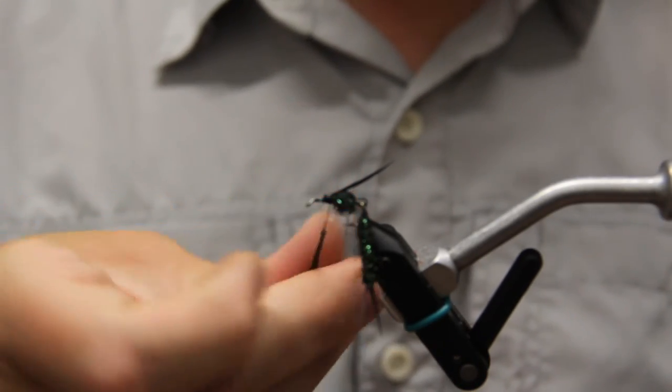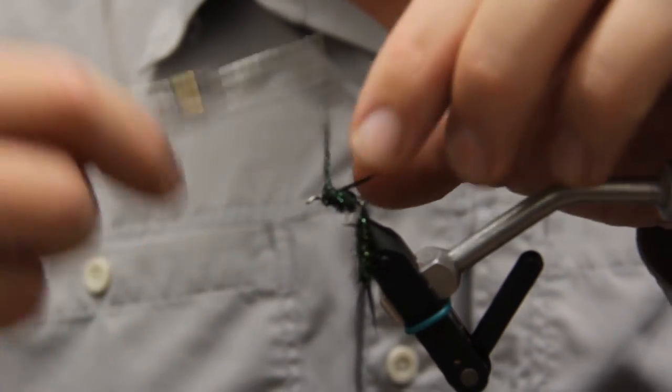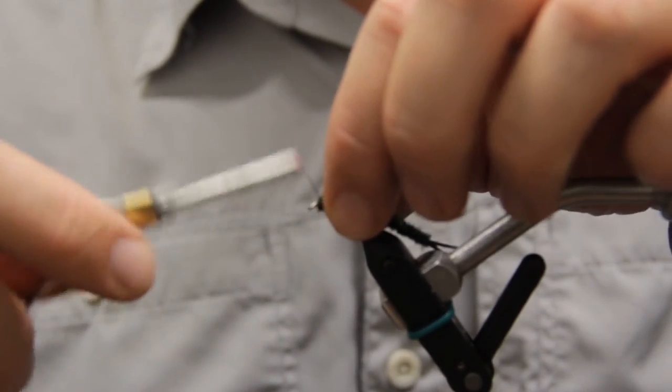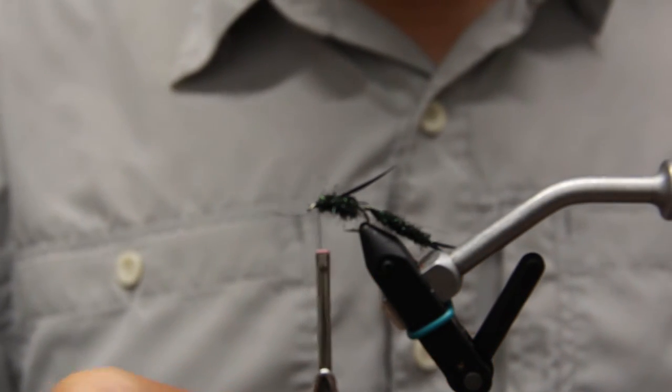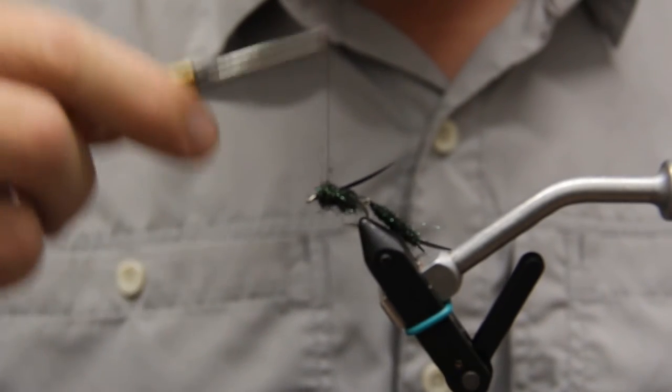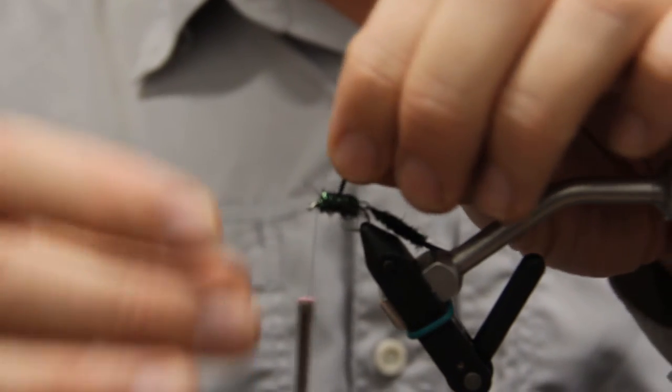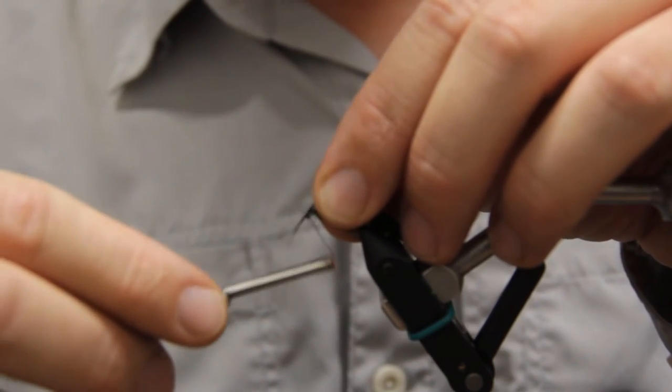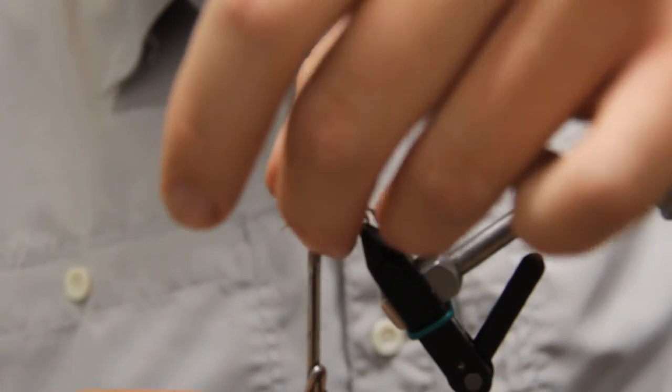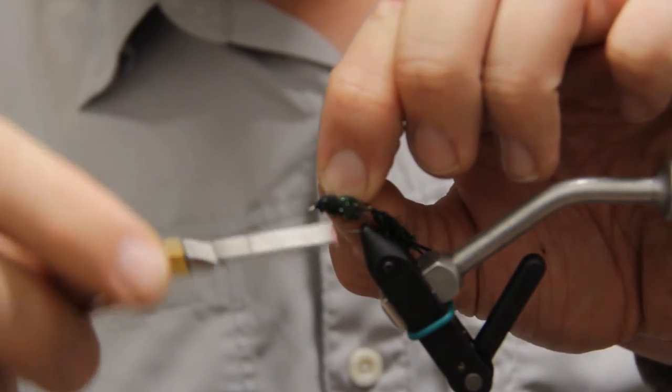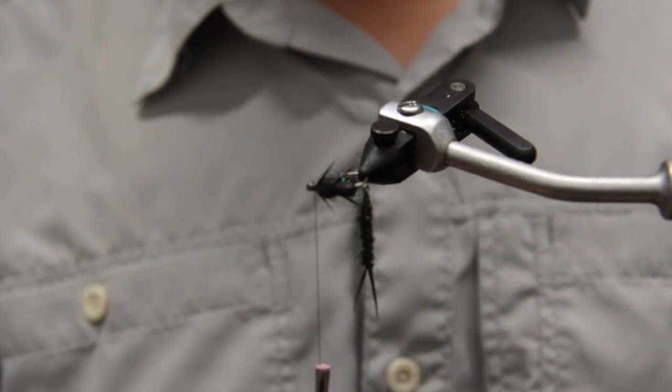So I tied those two in backwards, now I'm going to dub again. I like a pretty thick body. Again, pull each of those forward. So again, we have two sets of legs now.